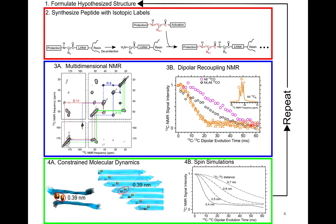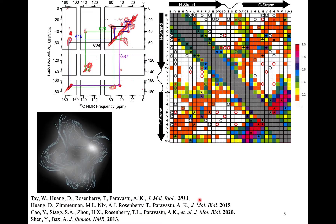This is a summary of our lab's workflow. We synthesize proteins in the laboratory with isotopic labels and then we do nuclear magnetic resonance, which is a radio frequency spectroscopy, to study interatomic proximities. Then we do computer simulations of molecular structure as well as spin dynamics to understand how everything arranges in three dimensions.